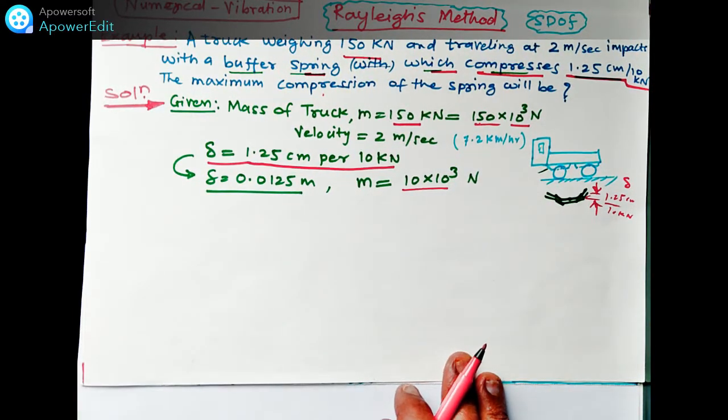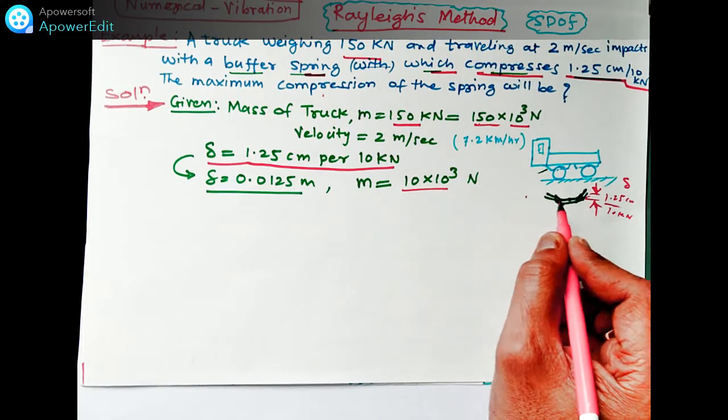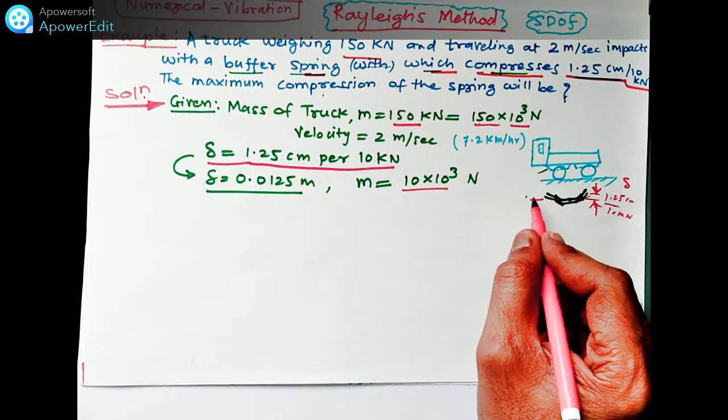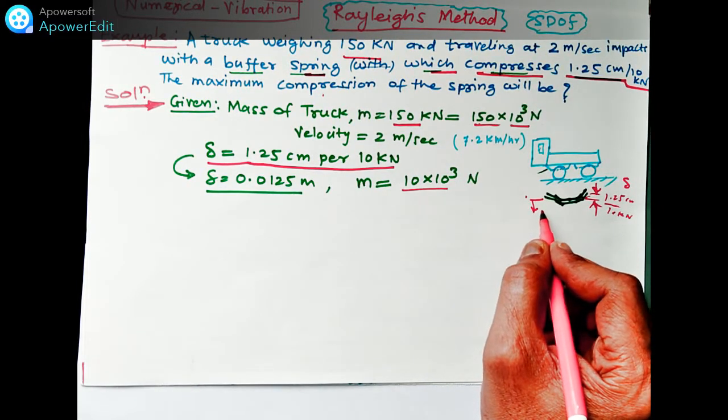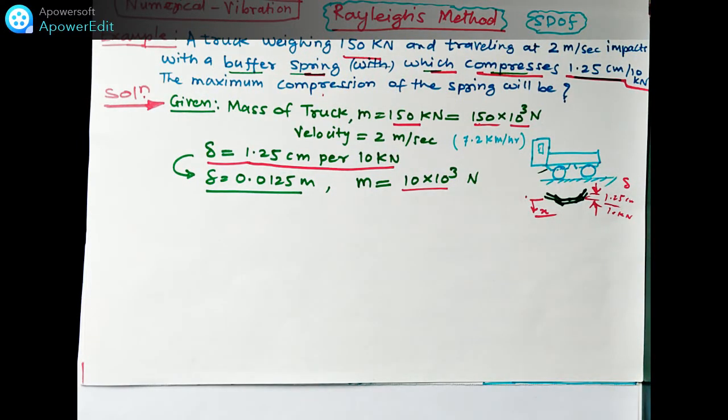So what we have to find out? We have to find out the maximum compression, this X, this displacement of this spring. That X we have to find out. How to find out? Well in this Rayleigh's method, we will see one by step by step.